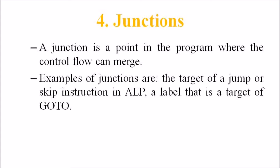The fourth one is the junctions. A junction is a point in the program where the control flow can merge. The examples of junctions are the target of a jump or skip instruction in the assembly language program, a label that is a target of go to.